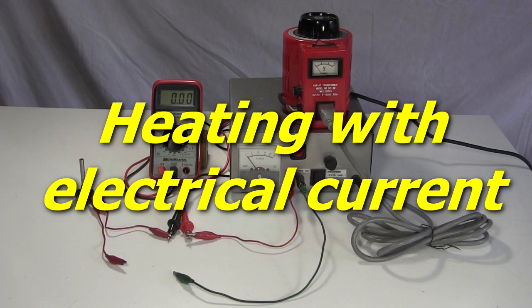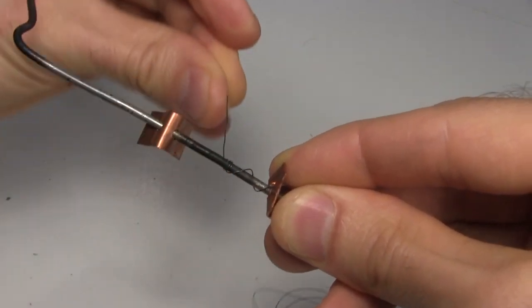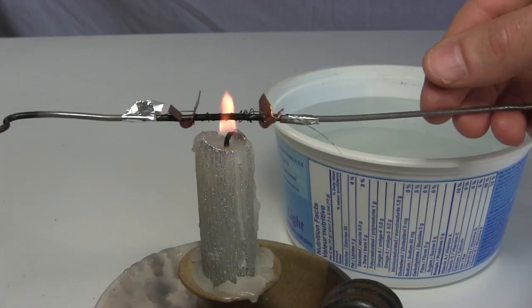This time, instead of using a flame to test it, I'll use electrical current to produce the heat. Here I'm making a spring by winding the nitinol wire around the clothes hanger wire, with some added copper pieces to hold the ends in place.